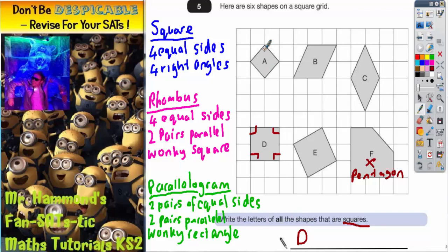Shape A has got 4 right angles in the corner. Just because shape A is rotated round, it does not mean it can't be a square.